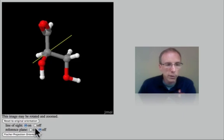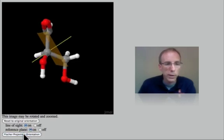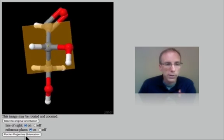A reference plane might give us a little bit of help. That reference plane is going to be perpendicular to the line of sight, so if we turn on that line of sight again and now reorient this so we're viewing down the line of sight, this is the Fischer projection.